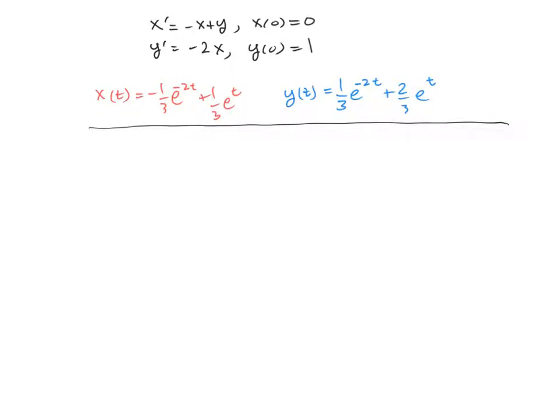So let's first check out x. If we calculate x(0), that is negative 1/3 e^0 plus 1/3 e^0. That does make 0, so that one checks.